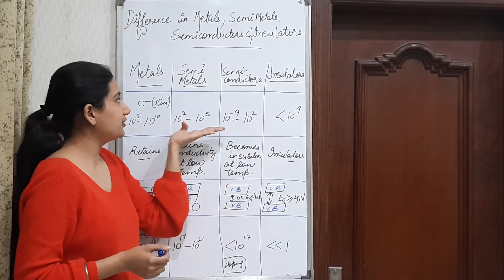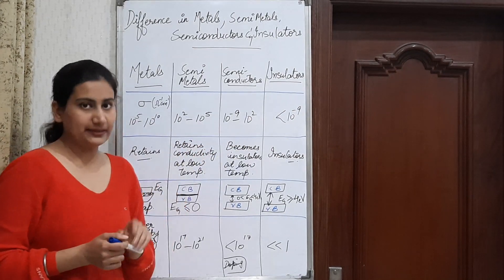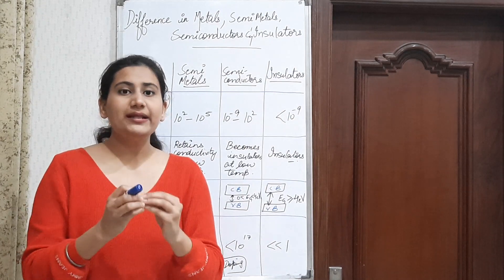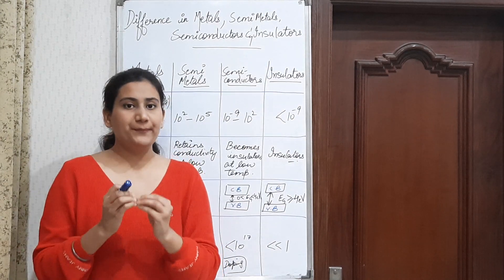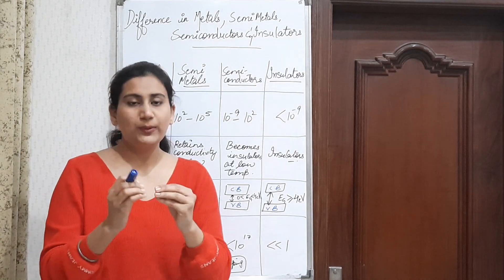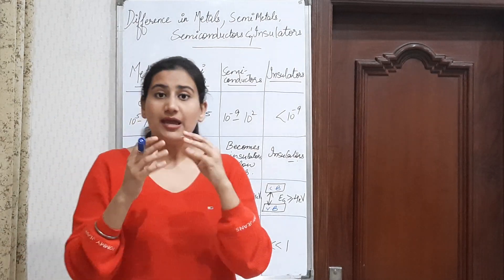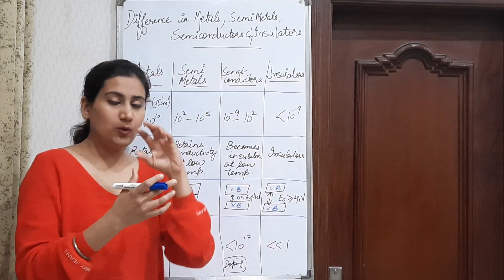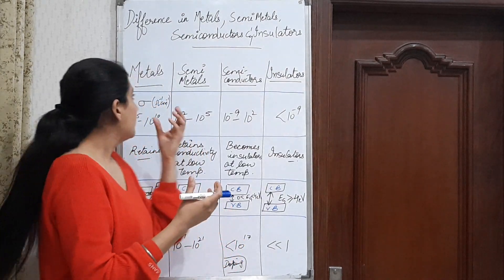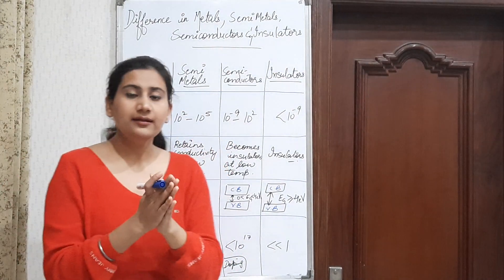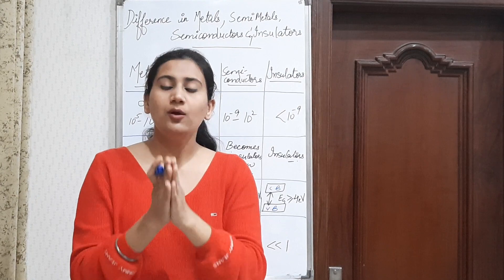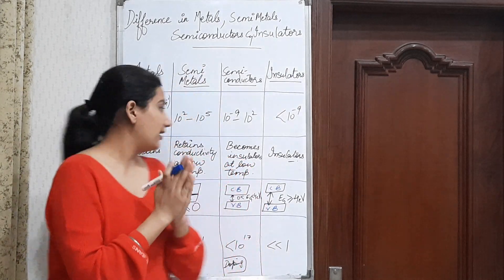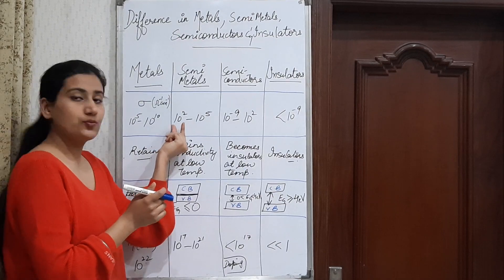Now how can we differentiate between semi-metal and semiconductor? The conductivity depends upon temperature, and with this we can differentiate between them. If we lower the temperature of a semi-metal, then the conductivity will definitely decrease, but it will only decrease to a level of around 10 to the power of 2.